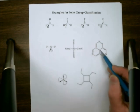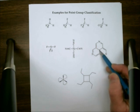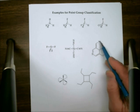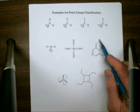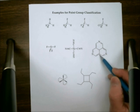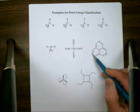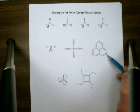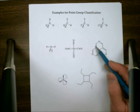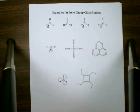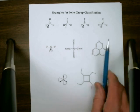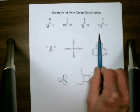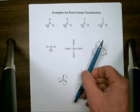The planar molecule has a three-fold axis of rotation, with two-fold axes passing through each nitrogen and along the carbon-carbon bonds. That's three C2 axes, and since the molecule is planar it has a horizontal mirror plane — so the point group is D3H. The two-fold axes that make it a D group are these three here.